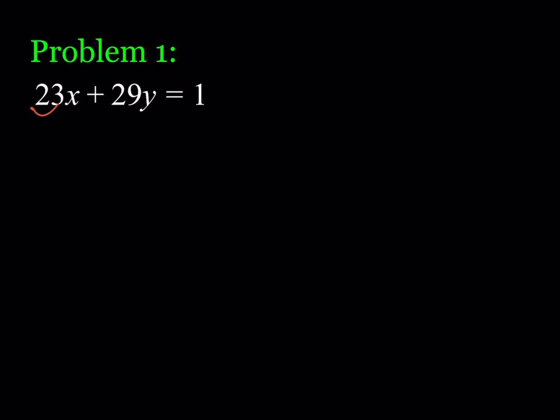I'm basically going to be looking at the remainders — what would happen if I divided both sides by 23? Since this equality is satisfied, it should also be satisfied in mod 23. In mod 23, the 23 term gives 0, and 29 mod 23 is 6, so I get 6y ≡ 1 (mod 23).